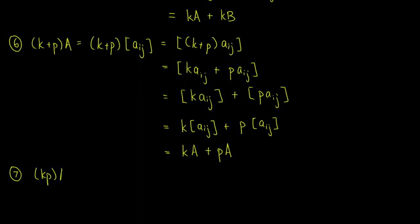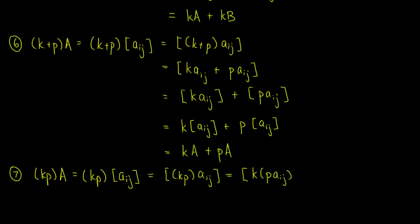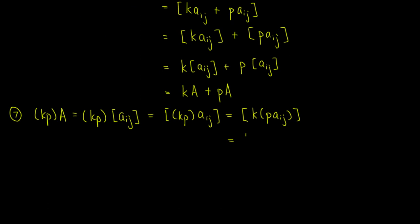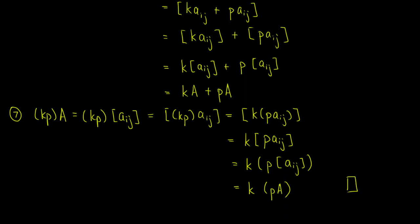Finally, for the seventh property, (K times P) times A equals (K times P) times the matrix with entries Aij, which is equal to the matrix with entries (K times P) times Aij. By the properties of the real numbers, this is equal to the matrix with entries K times (P times Aij). Now we can take K outside the matrix to get K times the matrix with entries P times Aij. Taking out the scalar again, we get K times (P times the matrix with entries Aij). So this is indeed equal to K times (P times A), and the proof is complete.